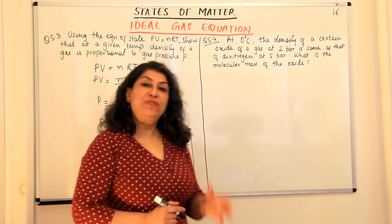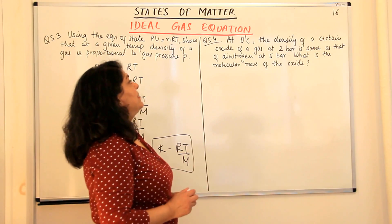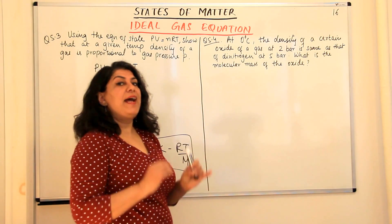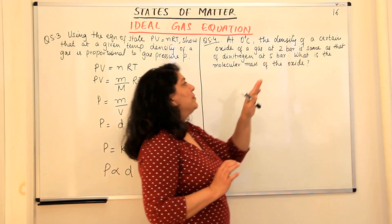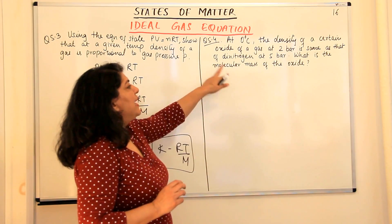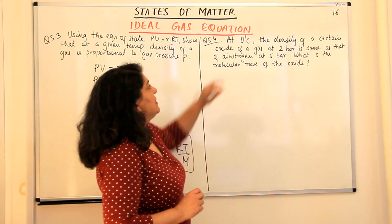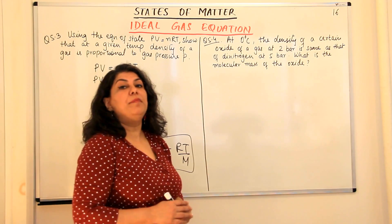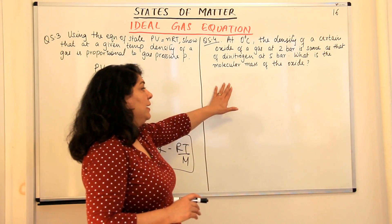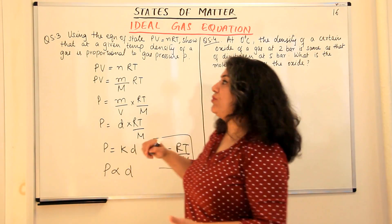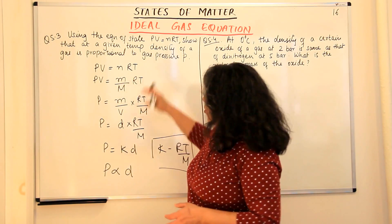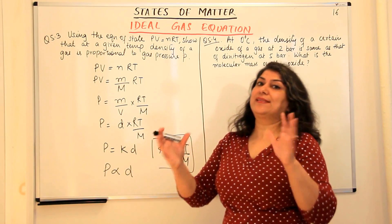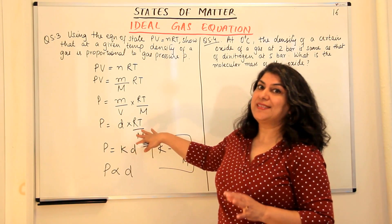Let us now solve the next question. This is question 5.4 from your NCERT textbook exercise. The question reads: at 0 degrees Celsius, the density of a certain oxide of a gas at 2 bar is the same as that of dinitrogen at 5 bar. The temperature is constant and both gases have the same density. What is the molecular mass of the oxide? It is not a direct application of PV = nRT. We have introduced the idea of density and we are talking of two gases whose densities are equal.